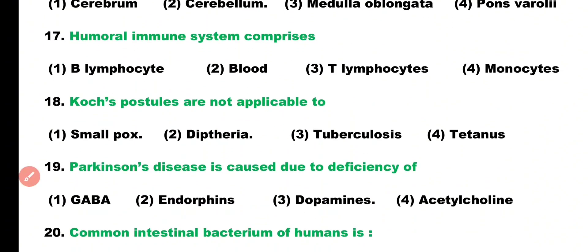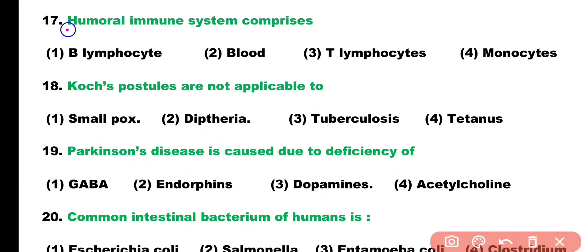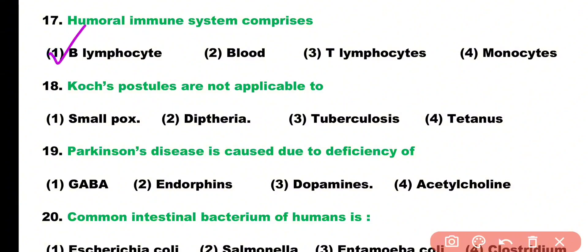Question number seventeen: humoral immune system comprises which cells? Options: B lymphocytes, T lymphocytes, monocytes. Correct answer is option one — humoral immunity is mediated by B lymphocytes.